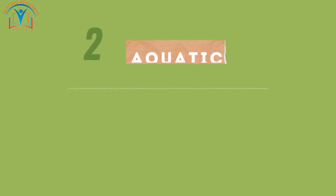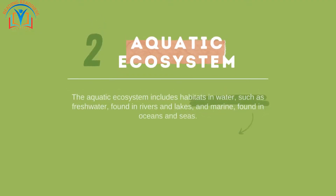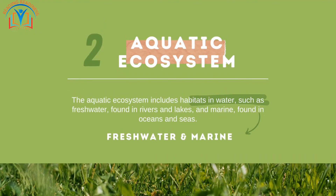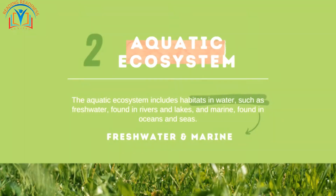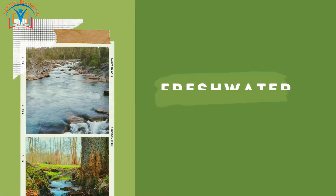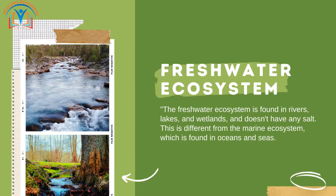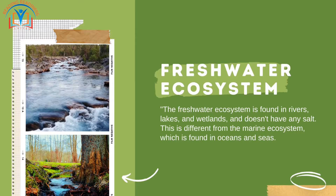The aquatic ecosystem includes habitats in water such as freshwater, found in rivers and lakes, and marine, found in oceans and seas. The freshwater ecosystem is found in rivers, lakes, and wetlands, and doesn't have any salt.